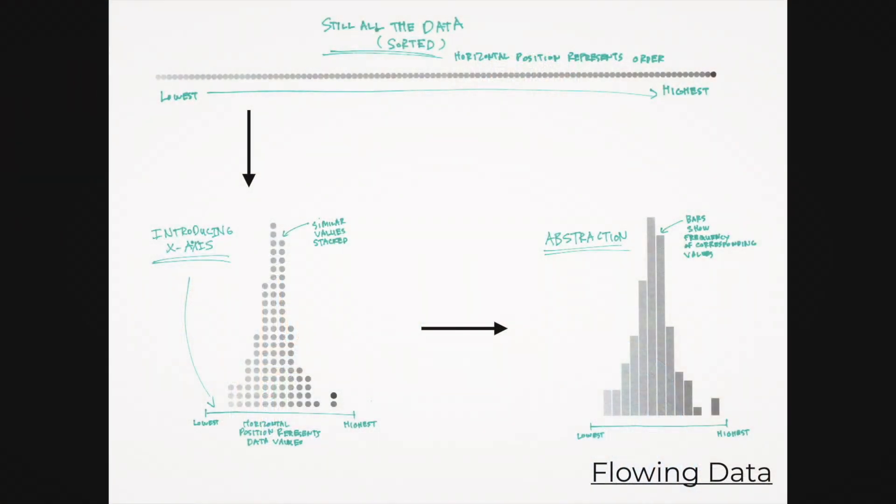So how do we build a histogram to visualize continuous data? Nathan Yau from FlowingData has a great primer on this that I recommend checking out. First, you take your data and sort the values from lowest to highest. Between this min and max you create a set of equally sized value ranges, or bins, that will be used to aggregate the data. Then you put each data point into its corresponding bin based on its value, stacking the data points on top of one another when they're in the same bin. Finally, you replace these stacks with bars, with the height of each bar being proportional to the number of data points in the stack it replaces.